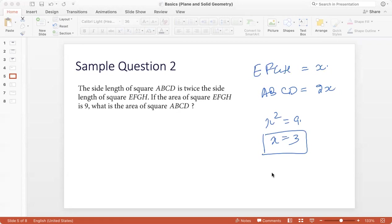If X is 3, then what is the side of ABCD? Side of ABCD is 2X, which is 6. So what is the area of ABCD? That is 6 squared, which is 36. So that's our answer.